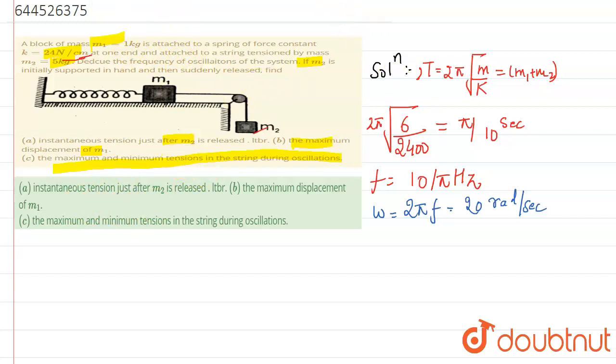The question is asking for instantaneous tension just after M2 is released. When M2 is released, the instantaneous tension is 0 and it is the minimum.